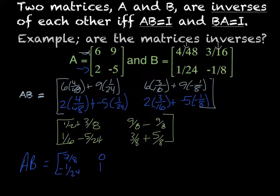negative 1 over 24, and 1. So because that does not equal the I2 matrix, that means they are not inverses.